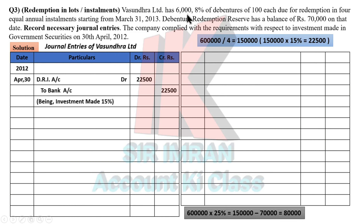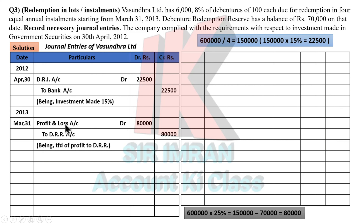The total DRR required is 25% of Rs. 6 lakhs = Rs. 1,50,000. But the existing balance is already Rs. 70,000. So the remaining amount = Rs. 1,50,000 − Rs. 70,000 = Rs. 80,000. The DRR entry for this year is: P&L to DRR Rs. 80,000.